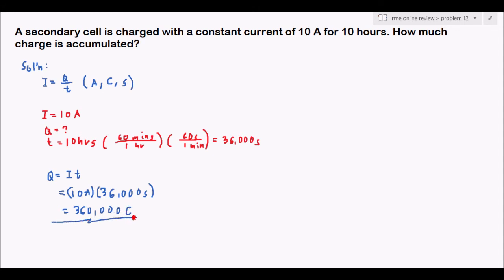The formula is I equals Q over T. We have similar problems from previous videos. Let's proceed to problem number 13.